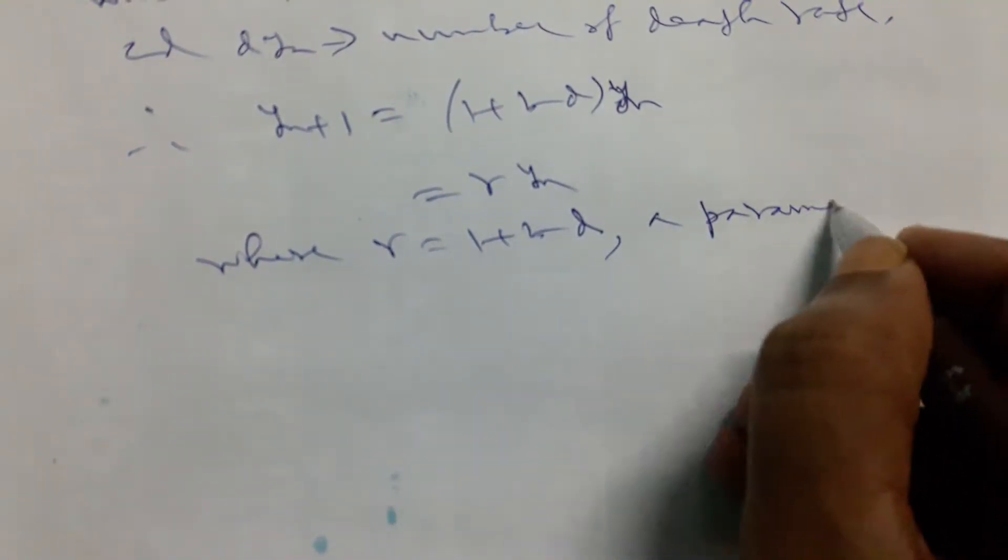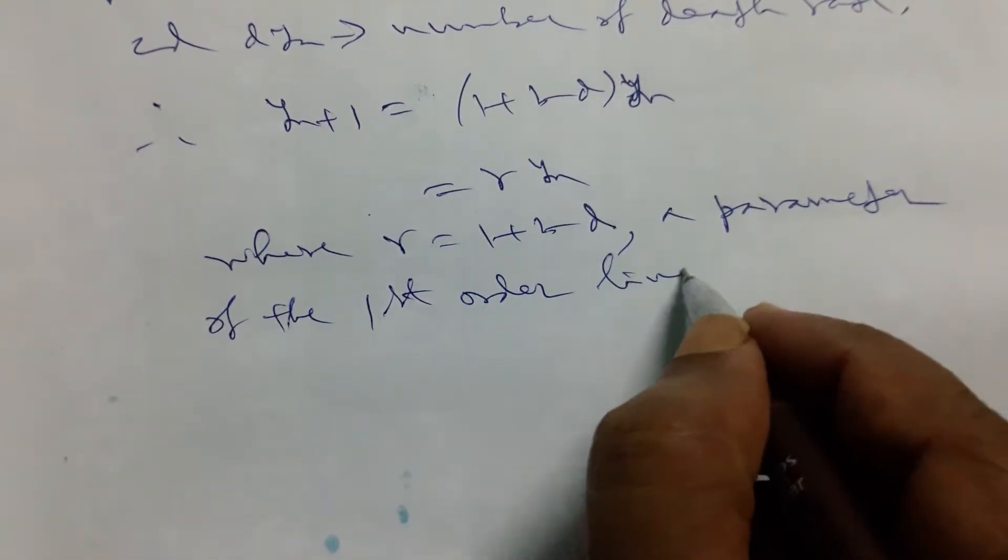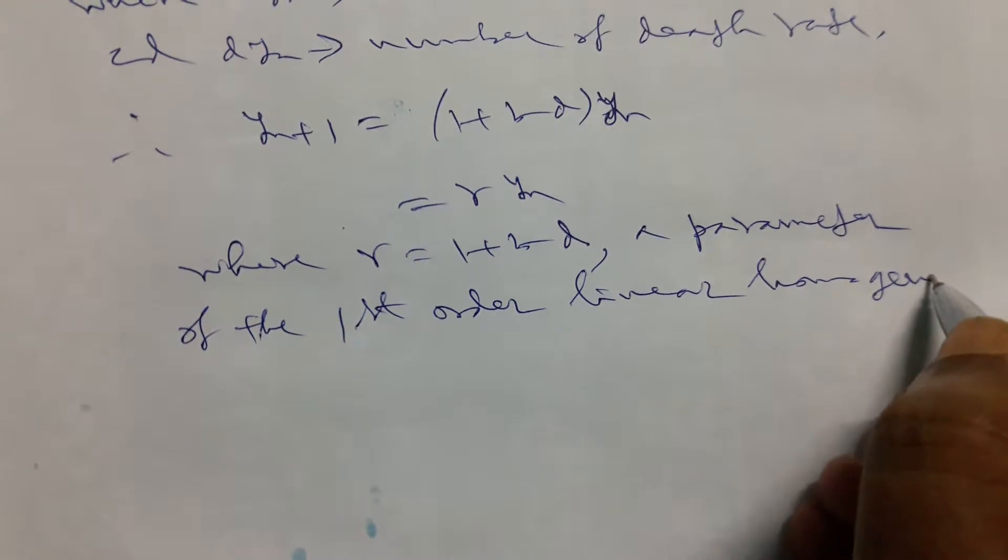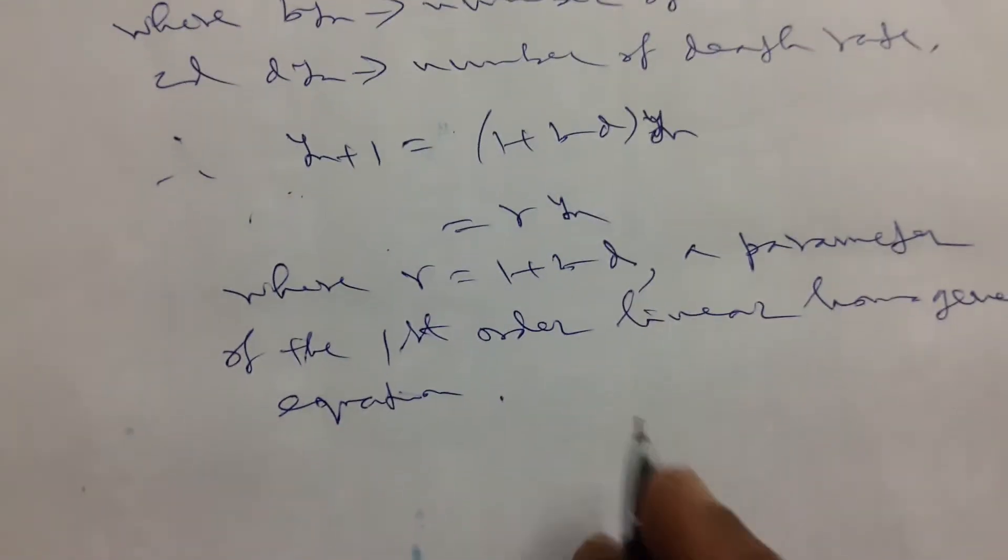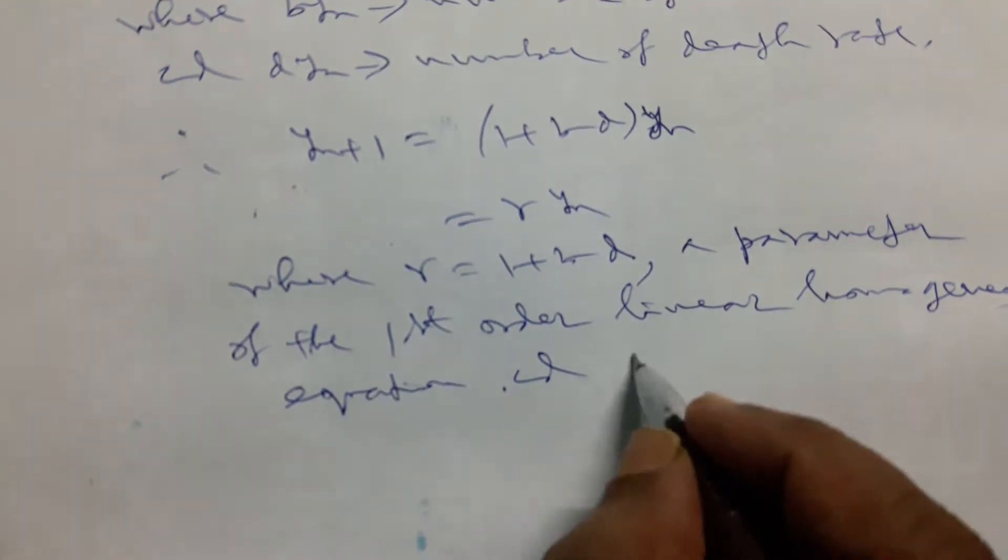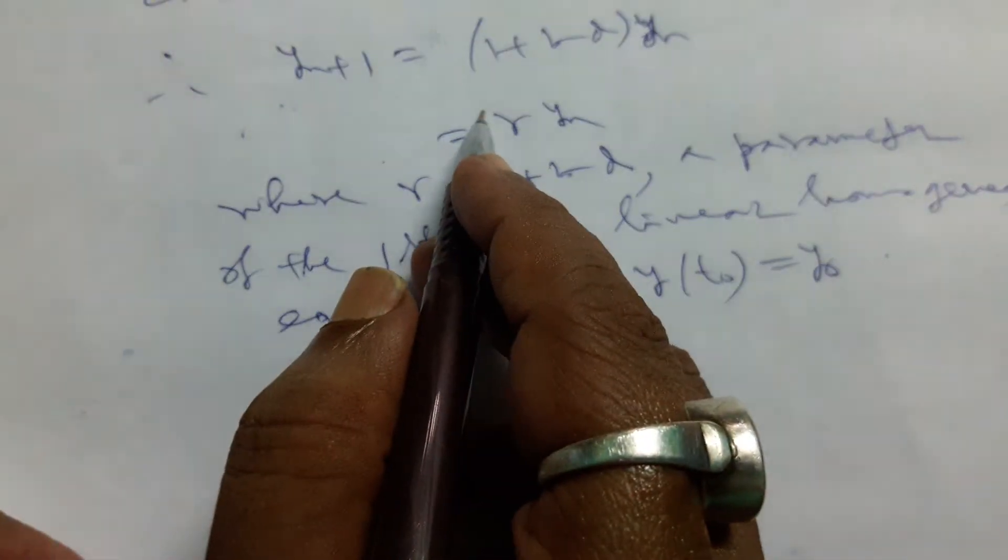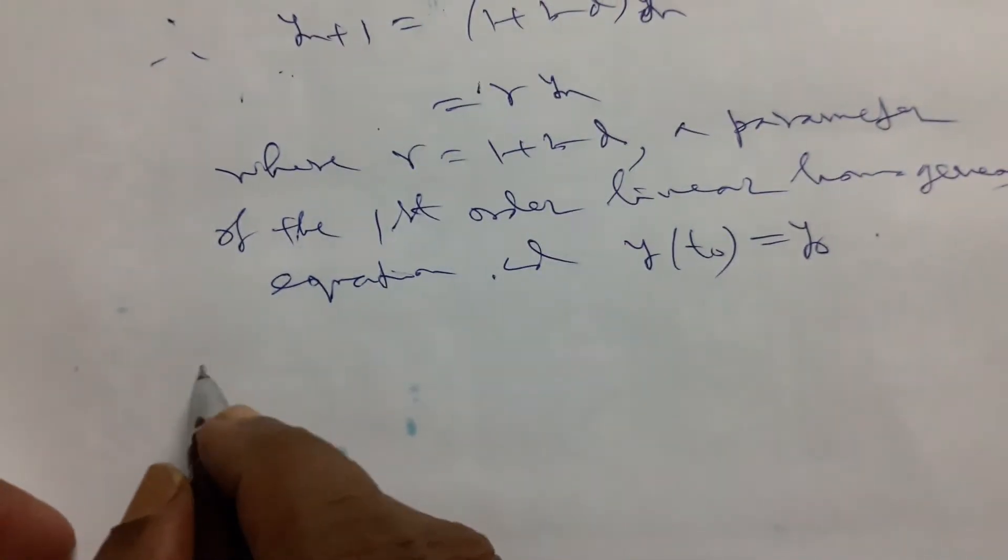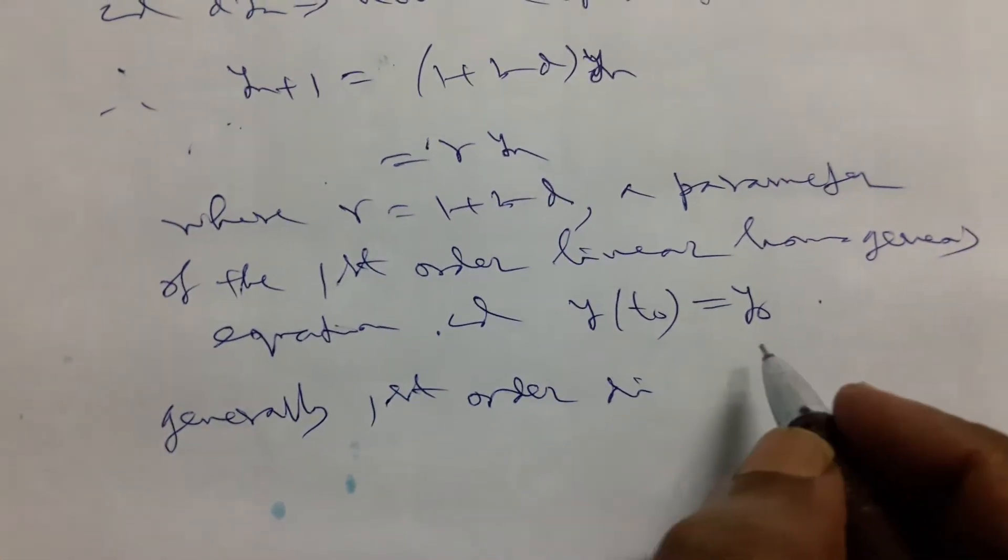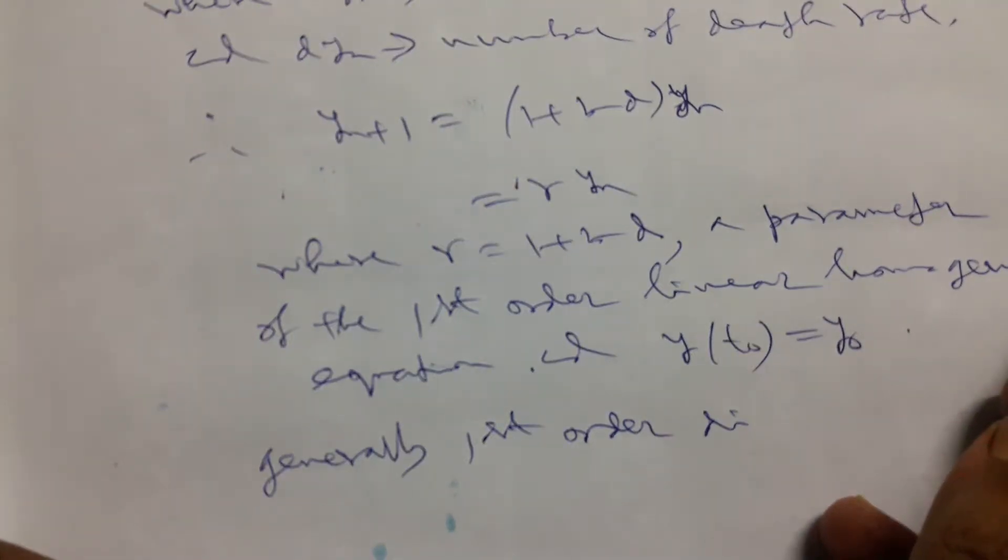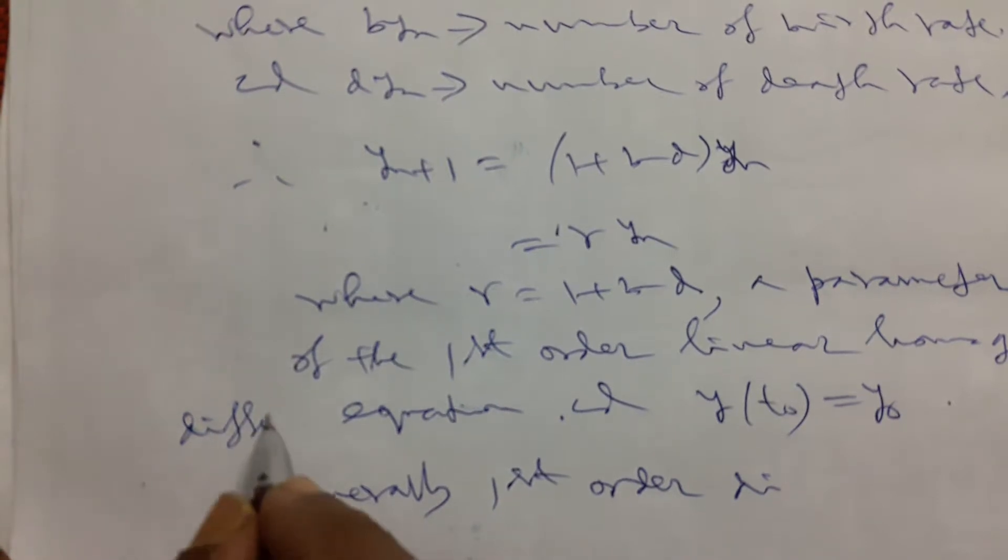But here, this equation is a linear homogeneous equation with initial conditions. If we find y(t_0) equals y_0, in general we write the first order difference equation, which is not differential equation. That is a linear homogeneous difference equation.